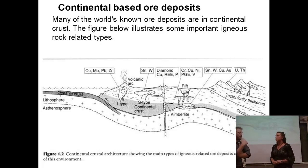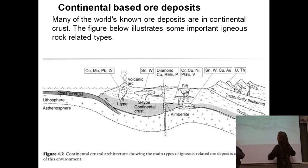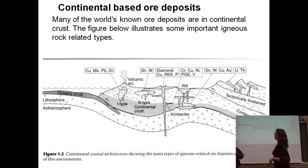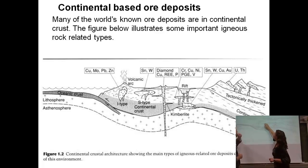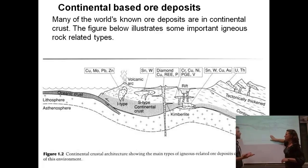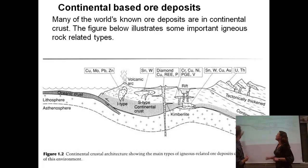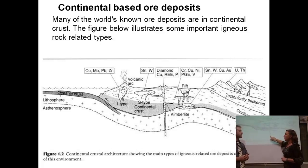Now we're looking at continents — not divergent or convergent boundaries, but continental igneous rocks. At the convergent plate boundary here, ocean crust is being subducted underneath continental crust, and we see copper, molybdenum, lead, and zinc forming from that volcanism. Tin and tungsten form here as well. There are also special circumstances called kimberlite pipes — that's where we get diamonds, brought up from a much deeper source than any of the others, coming from the asthenosphere. Diamonds form only under very, very high pressures.